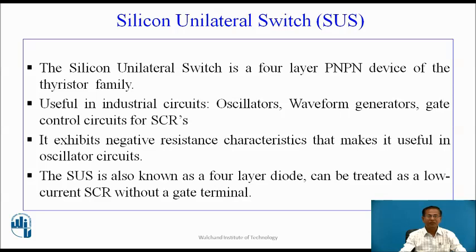It is useful in various industrial circuits like oscillators, waveform generators, gate control circuits for SCRs and other power devices like IGBT, MOSFET, GTO. It exhibits negative resistance characteristics that makes it useful in oscillator circuits. The SUS is also known as a 4-layer diode. It can be treated as low current SCR without a gate terminal.